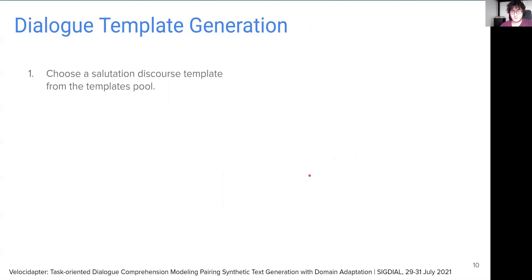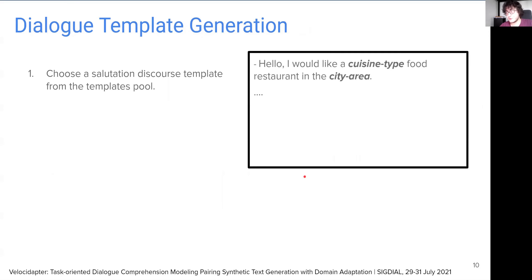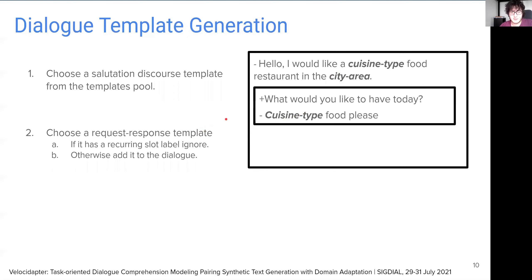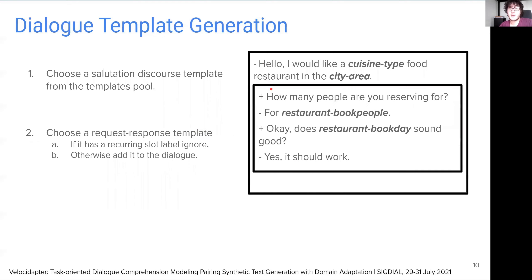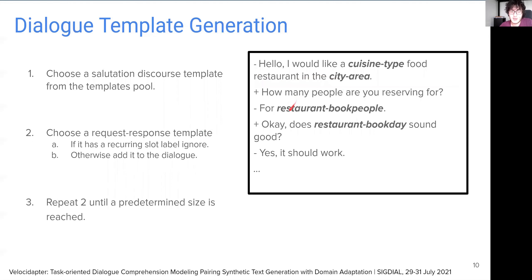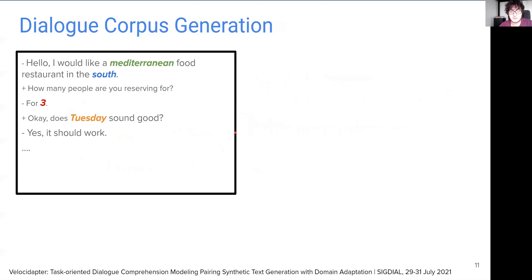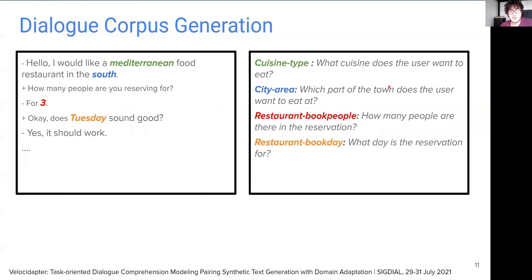In order to create a dialogue template, our system first chooses a salutation discourse template, such as the one on the right, and inserts it into the dialogue template. Next, it chooses a request-response template. If the chosen request-response template has a slot label that already exists in the dialogue template, then it chooses another one. When it finds a discourse template with unique slot labels, it adds that to the dialogue template, and repeats this second step until a predetermined size is reached. So this is followed by a final step, where each dialogue is filled with surface values and matched to a set of questions. Eventually, we end up with a synthetic dataset on which we can train dialogue comprehension models.